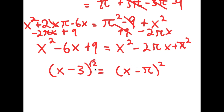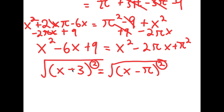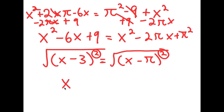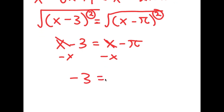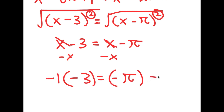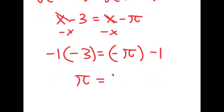Now I have (x minus 3) squared is equal to (x minus pi) squared. I want to cancel these squares, so I take the square root on both sides. The square root of (x minus 3) squared equals x minus 3, and the square root of (x minus pi) squared equals x minus pi. So I get x minus 3 is equal to x minus pi. Subtracting x from both sides gives negative 3 is equal to negative pi, and multiplying both sides by negative 1 gives pi is equal to 3.